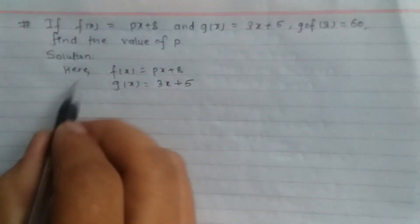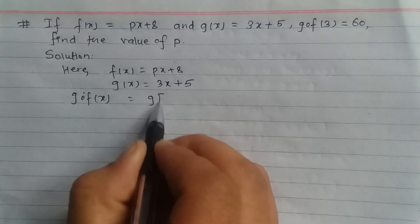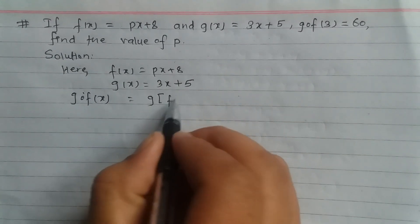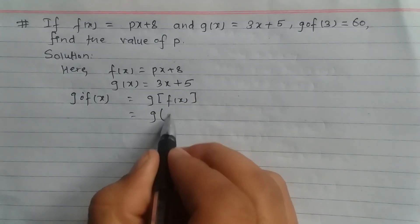First, we find g composite f(x). g∘f(x) equals g[f(x)]. The value of f(x) is px + 8.